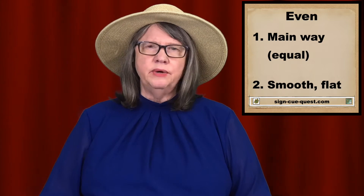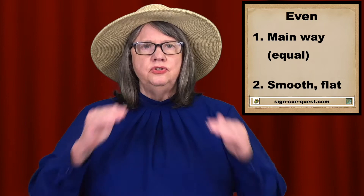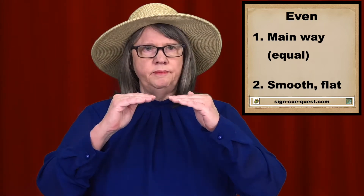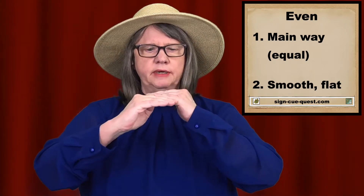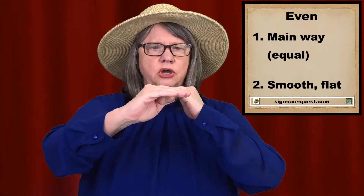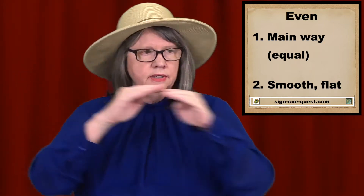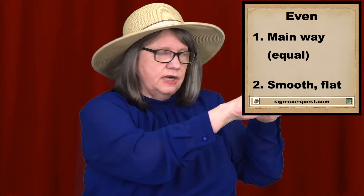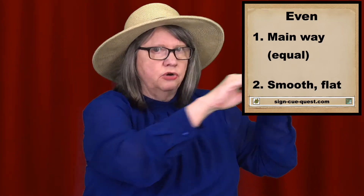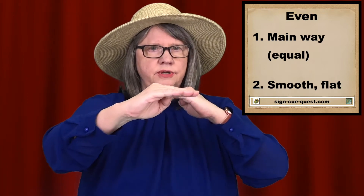The second way of signing even is for the meaning smooth. Use your bent B hands again, but this time make a plane. Move out to show a smooth surface. It can be done to the side — look for a smooth shelf — or it can be done straight forward, like a smooth road. Even.